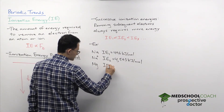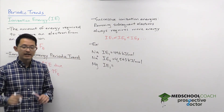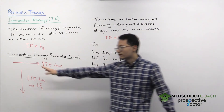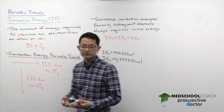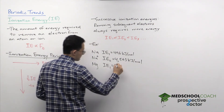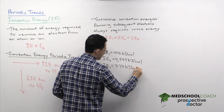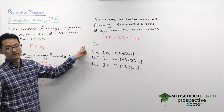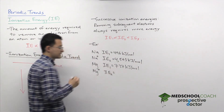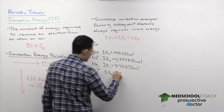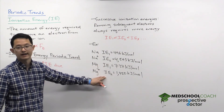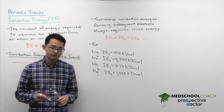Now let's consider magnesium. Since magnesium is to the right of sodium on the periodic table, we can predict it has a greater first ionization energy — and indeed it does: 737 kilojoules per mole, greater than sodium's 496. The second ionization energy of magnesium, removing an electron from Mg⁺, is 1,450 kilojoules per mole, which matches our expectation that ionization energy increases from the first to the second.